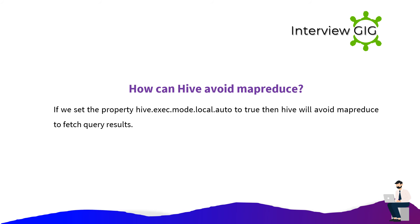How can Hive avoid MapReduce? If we set the property hive.exec.mode.local.auto to true, then Hive will avoid MapReduce to fetch query results.